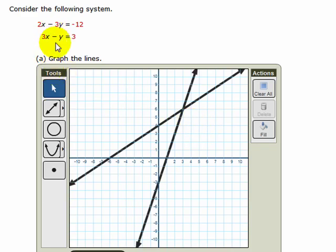So now I've graphed both lines, and from those lines, I can see the solution of the system of equations, which appears to be at (3, 6).